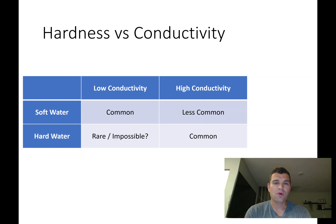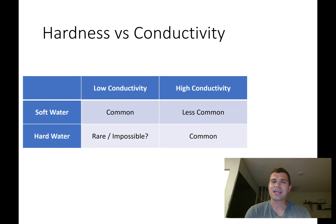As for hard water that's low conductivity, I couldn't come up with an example, so if anyone knows one, please add it to the comments — for now I put rare or impossible. The key point is that hardness and conductivity are not the same, and there's no direct formula between them.